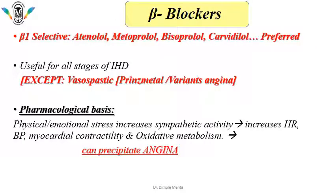First, we will discuss about beta blockers. Beta blockers, especially beta-1 selective atenolol, metoprolol, and bisoprolol, are useful for the treatment of angina because non-selective blockers will have more side effects. They are useful at all stages of IHD except vasospastic angina. Even though they are beta-1 selective, at higher doses they lose their selectivity and may cause bronchial asthma or bronchospasm. So for any kind of vasospastic disease, they are contraindicated.